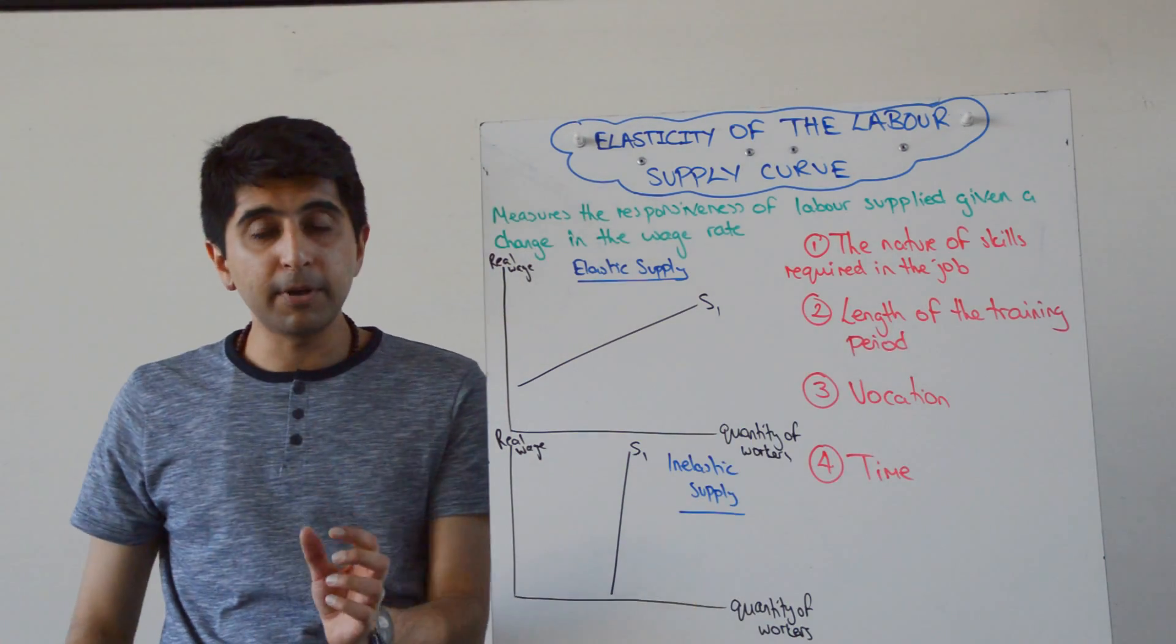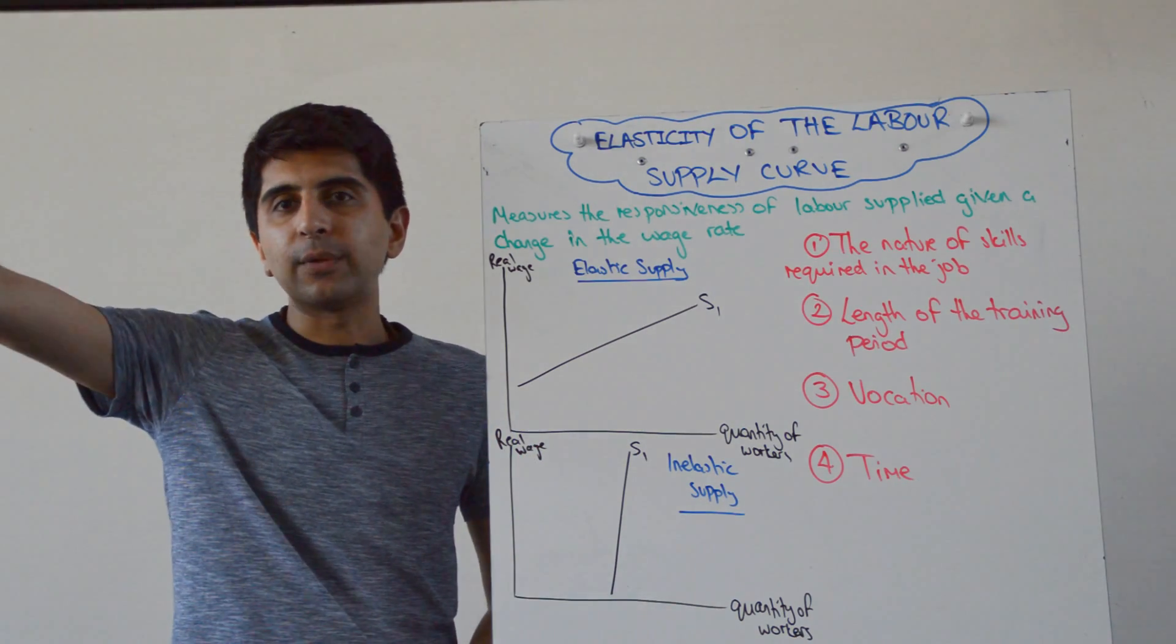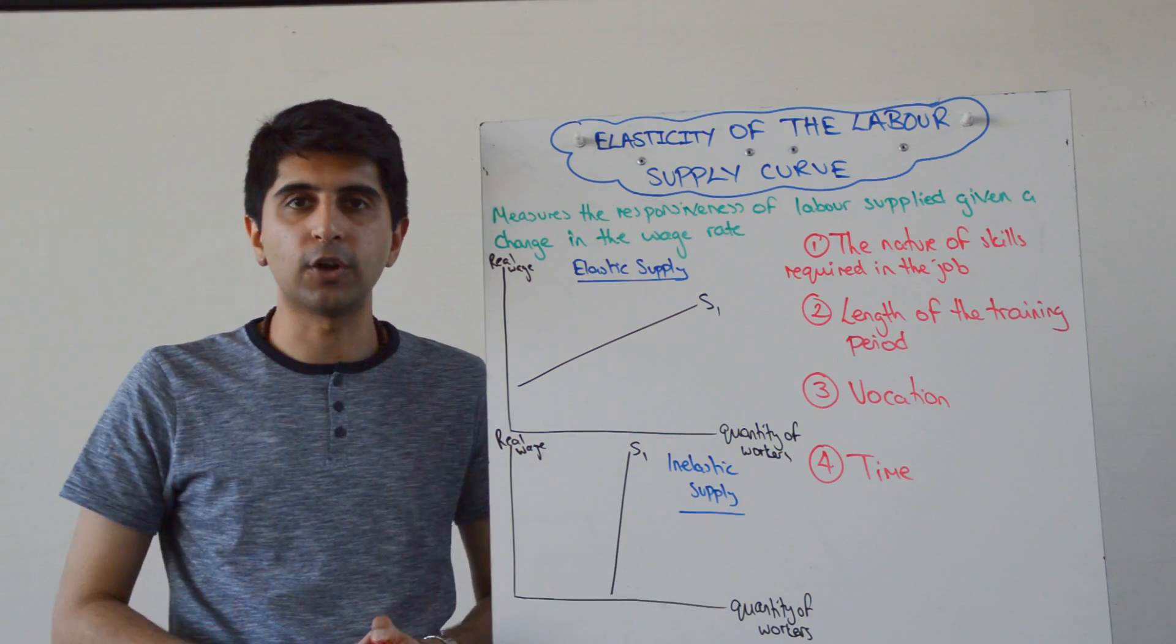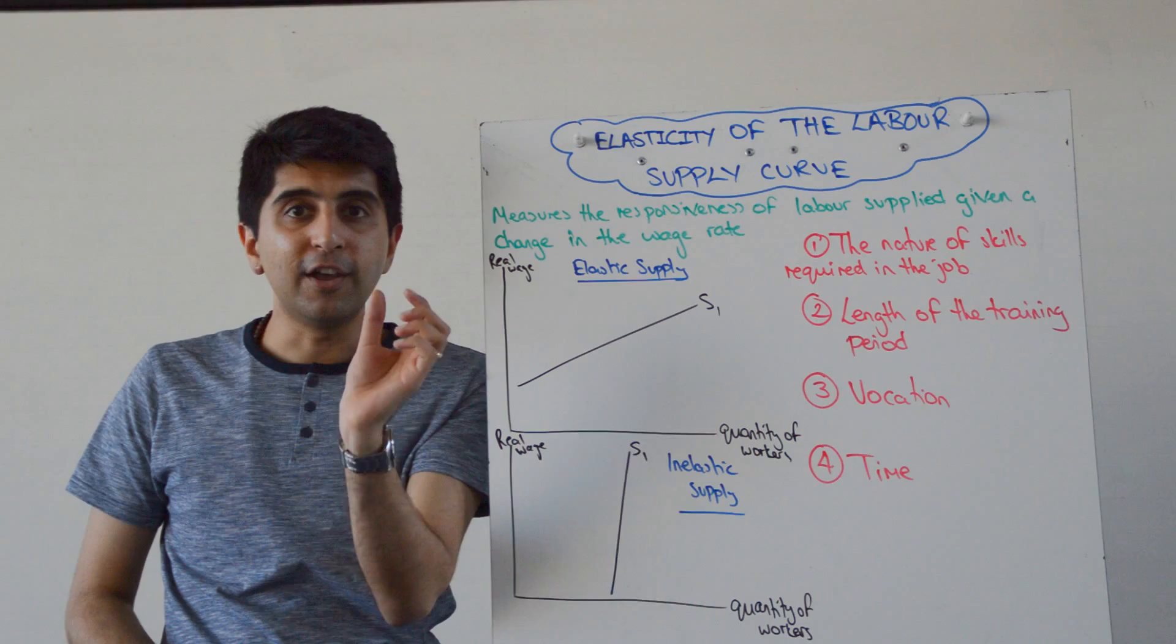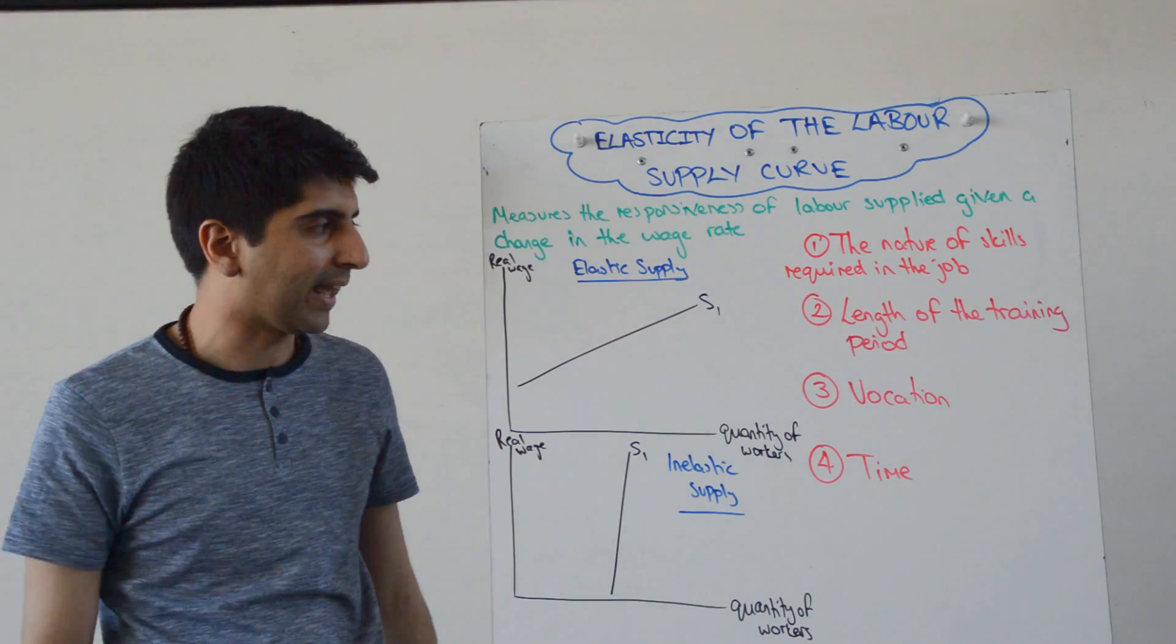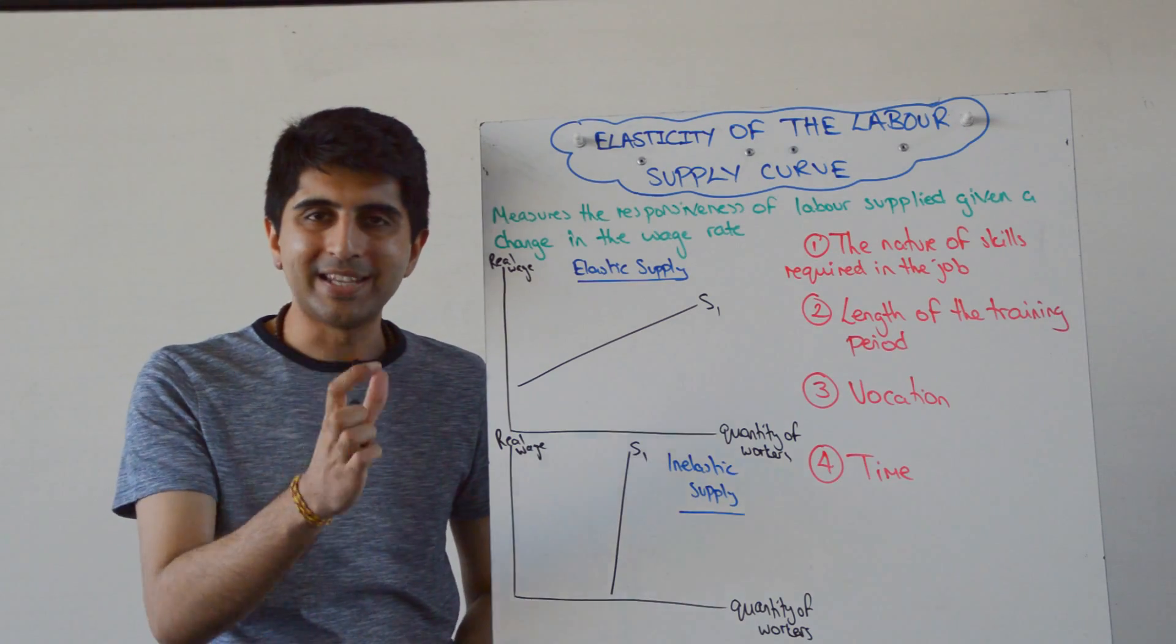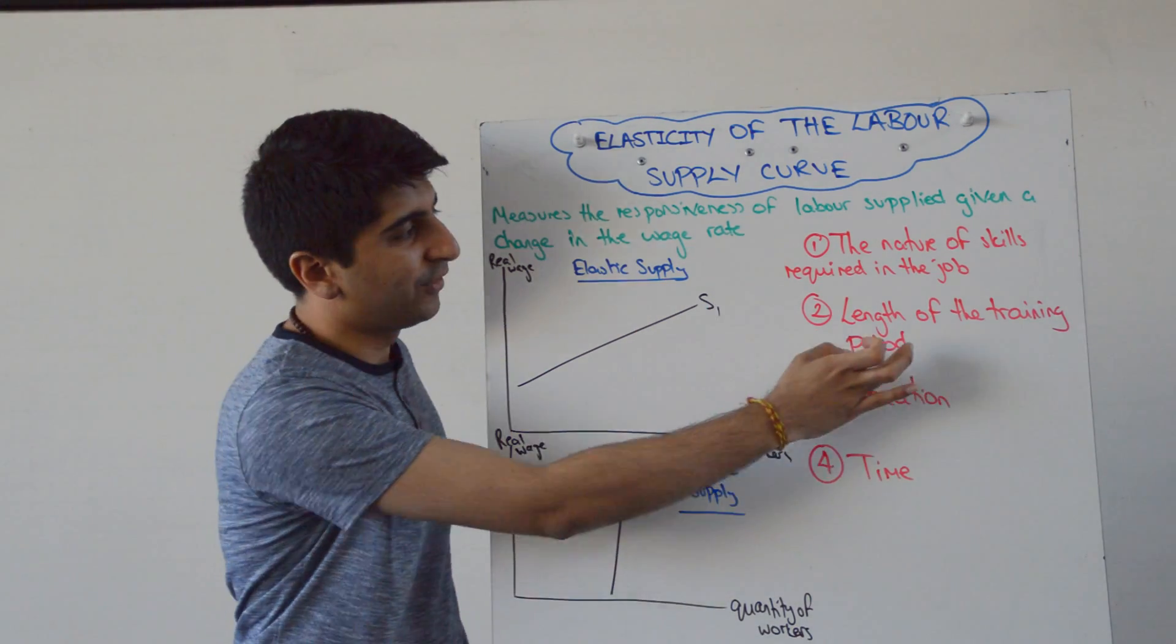The length of time of the training period—similarly, the longer the training period is, the less likely those outside the profession are going to come and take jobs, even if wage rates go up. So that makes labor supply very inelastic, wage inelastic in that sense. So the longer the training period, even if wages go up, the more wage inelastic supply is going to be, as it's very hard for workers to accept such a long training period.